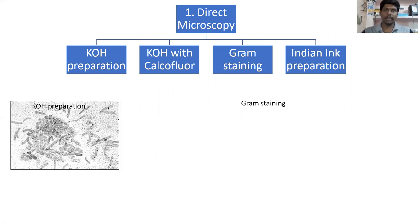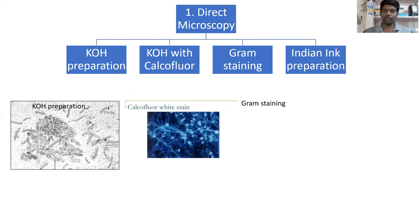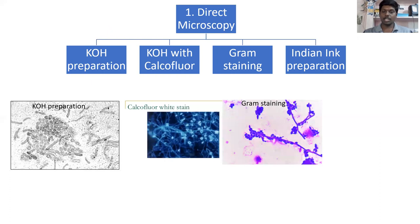KOH alone is not so efficient, so we have an advanced method called KOH with calcofluor. Calcofluor will brightly stain the fungi, and the fungus will be visualized brightly under UV microscopy. There are also fungi which are gram positive and gram negative — for example, Candida is a gram positive yeast, so we go for gram staining to identify such yeast cells.